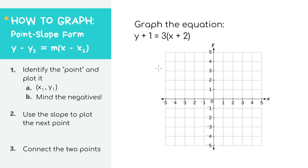To graph using point-slope form, the equations are written in a format where m still represents the slope, but y1 and x1 represent a point on the graph — hence the name point-slope form. Our first step here is to identify the point, which is x1 comma y1, and plot it.